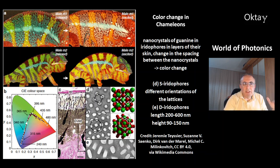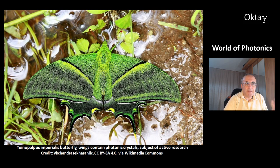Below are the D-iridophores. They have typically a length of 200 to 600 nanometers and a height of 90 to 150 nanometers. Here's another example: the Aenopalpus imperialis butterfly. Its wings also contain photonic crystals, and this butterfly is a subject of active research.